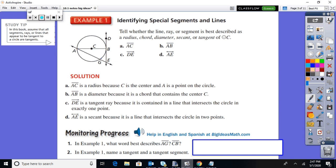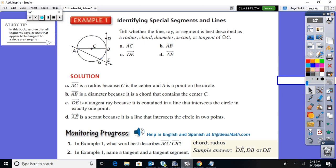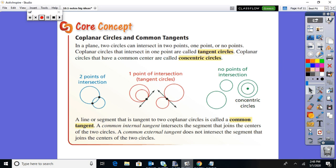So pause the video, try the monitor progress questions. In example one, what word best describes AG? And we alluded to this earlier, that's a chord. And what best describes CB? That's a radius. And again, same picture, name a tangent and a tangent segment. You could have multiple answers here. You could have DE, you could have DB, or DE for the tangent segment.